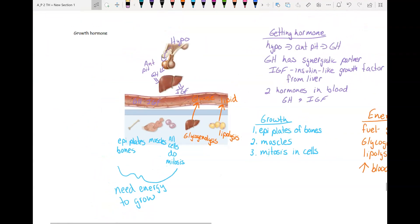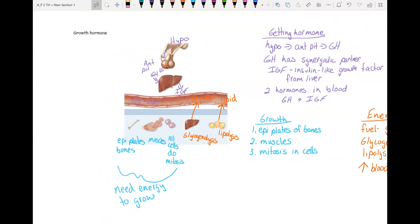So growth hormone is controlled by the hypothalamus. It's released by the anterior pituitary. It stimulates the liver to secrete insulin-like growth factor. So then you have the two hormones working synergistically together. They stimulate growth through the epiphyseal plates of your bones, your muscles, and by telling cells to do mitosis. And they give you the energy to grow by stimulating the liver and the adipose to release stored nutrients, which is the diabetogenic effect.